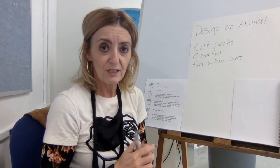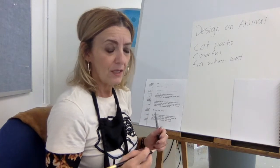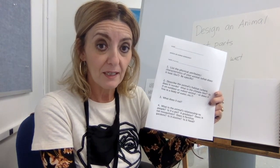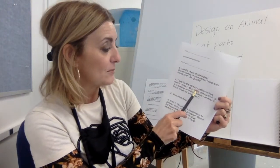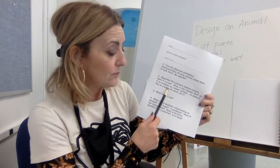Then you look at the worksheet. It says to list the physical attributes — what does this animal look like? Be specific. That's doing it with words, and then you'll also do it visually with a picture. Next, describe the animal's habitat — where does it live? Does it live in a warm climate? Is it an indoor or outdoor animal?